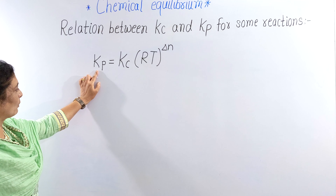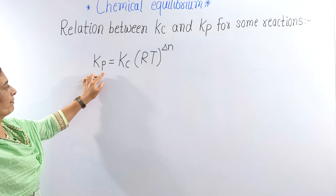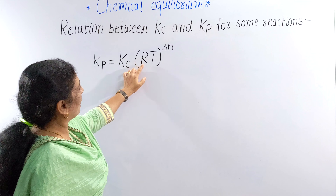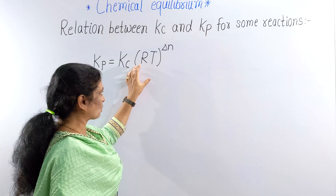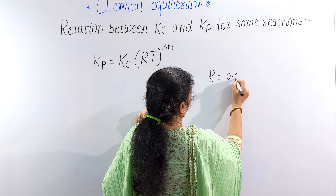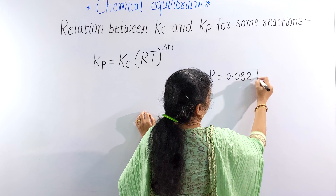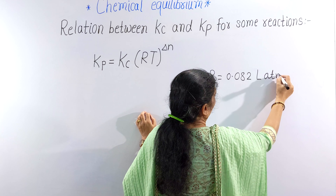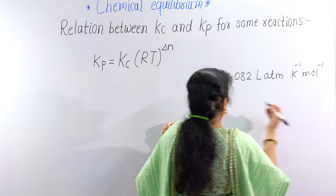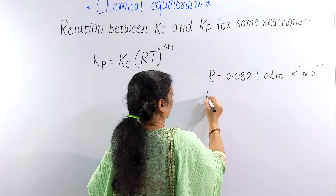Kp is the equilibrium constant in terms of pressure. Kc is the equilibrium constant in terms of concentration. R is the gas constant. The value of R is equal to 0.082 litre atmosphere per Kelvin per mole, and if you take it in joule, it is equal to 8.314 joule per Kelvin per mole.